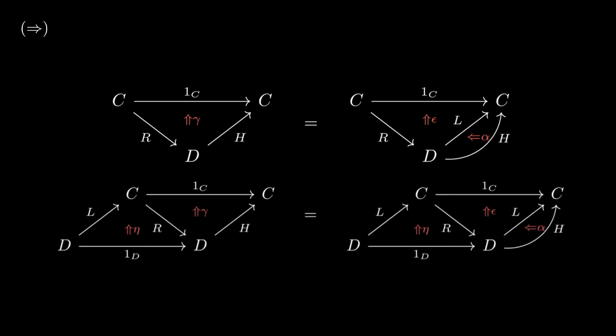But now the right side, by the triangle properties, is just alpha. So we have successfully showed that alpha, this arbitrary factorization through L epsilon, is just eta gamma as before, and we are done with uniqueness. And so this shows the forward direction.